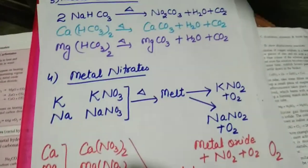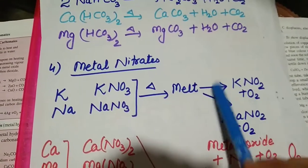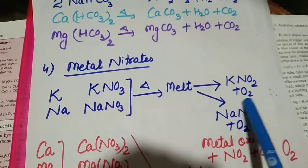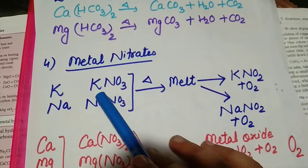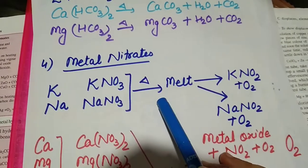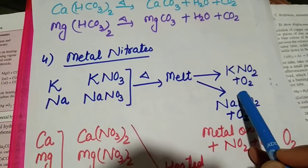So first thing, if any observation based question comes, you have to write down the name of the products. And if any gas is evolving, write about that first. Like when potassium nitrate is heated, a colorless gas is obtained which is oxygen.